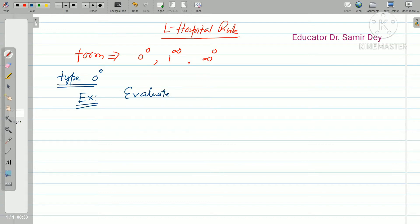Evaluate limit x tends to 0, sin x to the power 2 tan x. Let me help you understand. So here we want to evaluate this, that is here limit x tends to 0, sin x to the power 2 tan x.